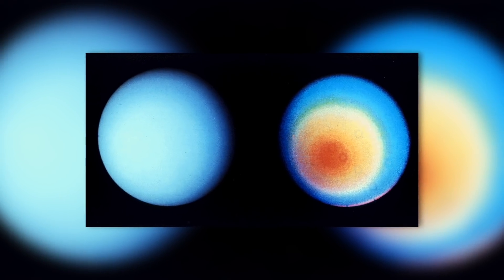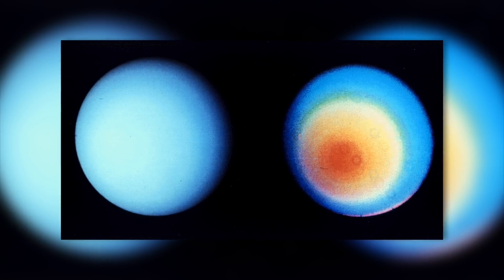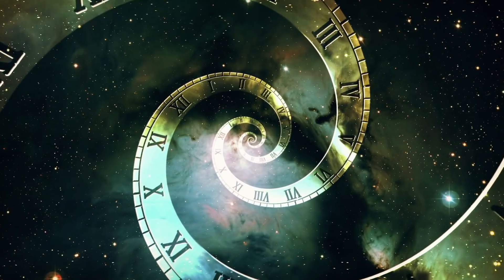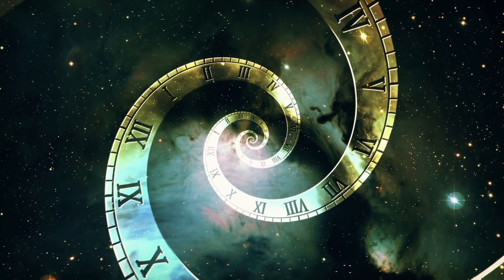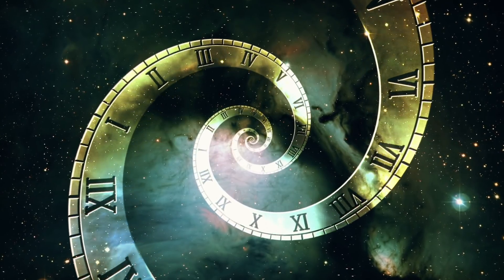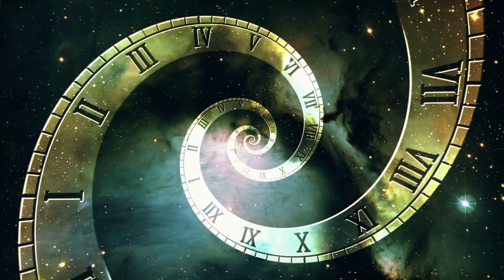If one observes the picturesque sunrise thus at the north pole of the giant planet, it lasts a full 42 years before the radiating disk disappears again in the horizon. The following night lasts just as long.